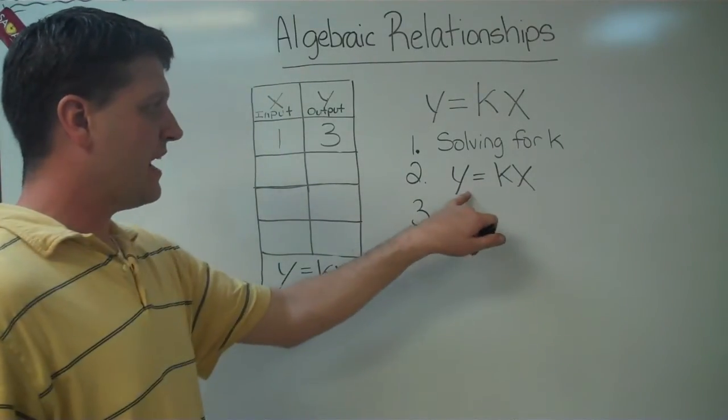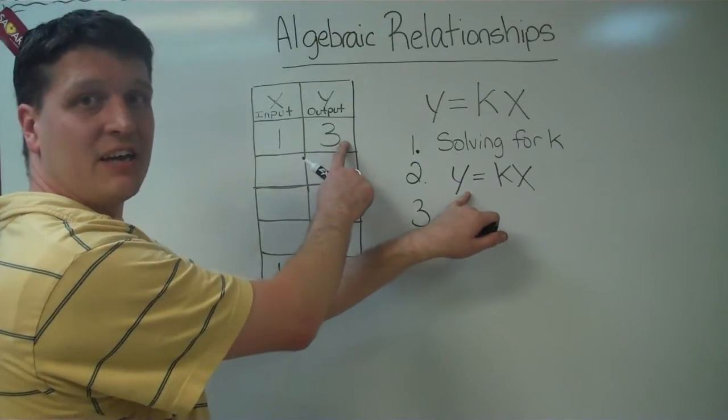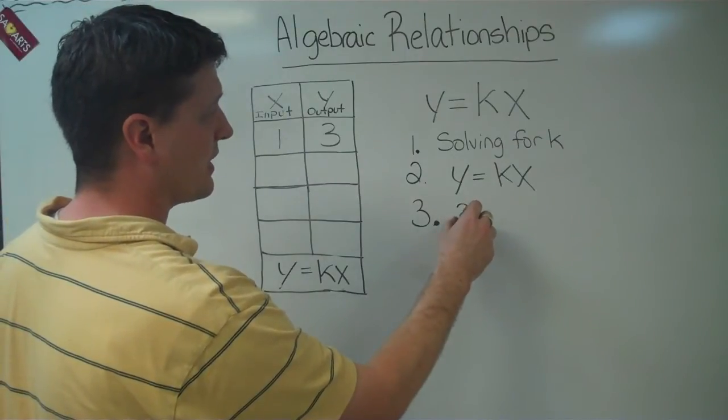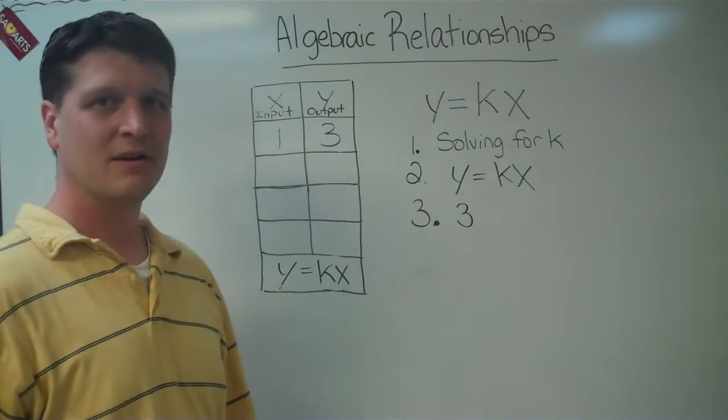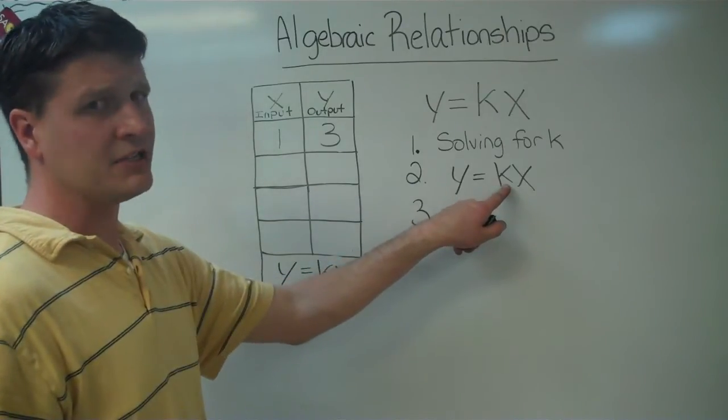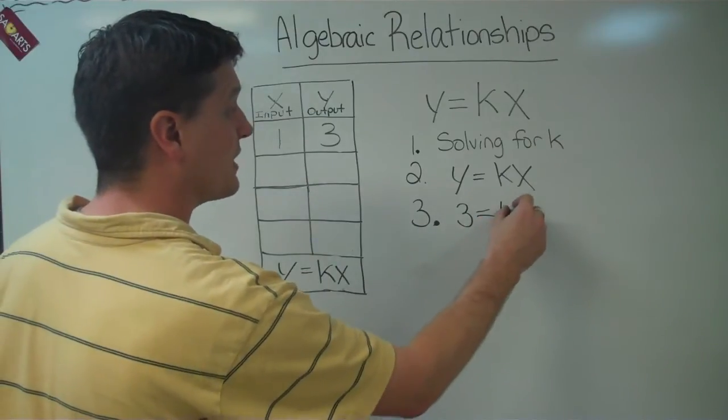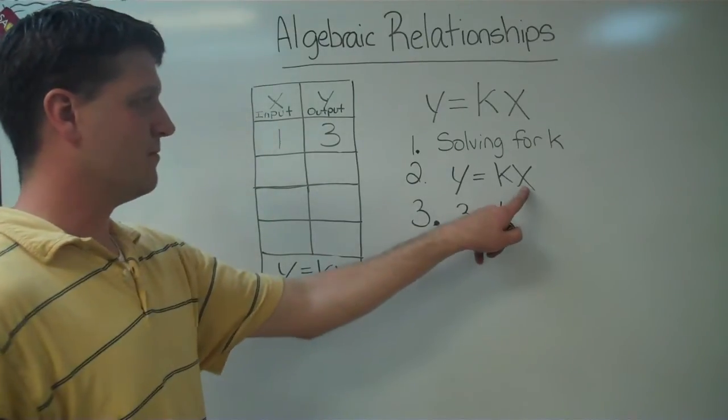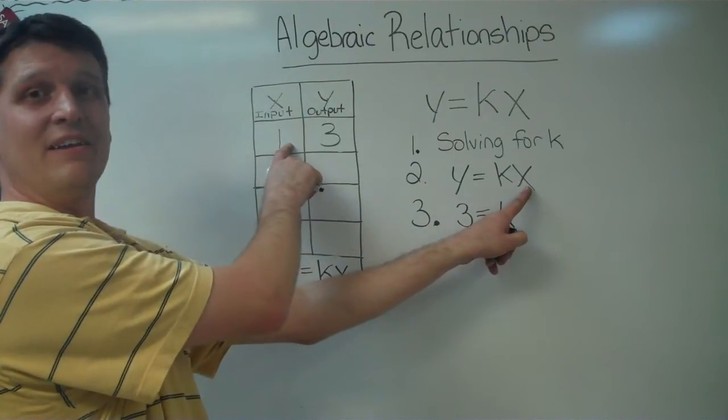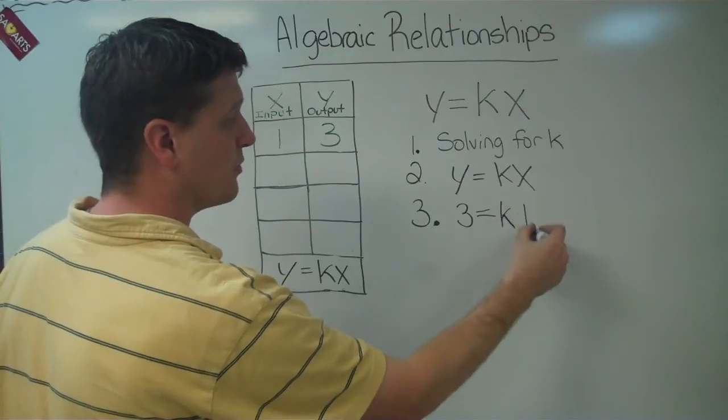I know that I have a y value. It's given to me. My y value is three. So instead of y, I can substitute, and I can put a three there. Bring down my equal sign. k, we don't have that one yet, so we've got to leave it as an unknown. The unknown is k. But we have a value of x, don't we? We have a value of x, and it's one. So we can substitute our x with a one.